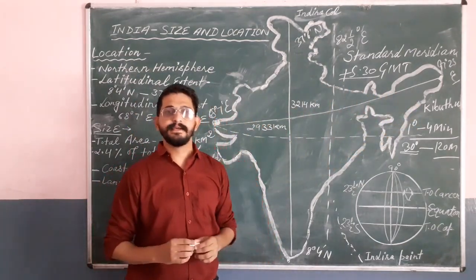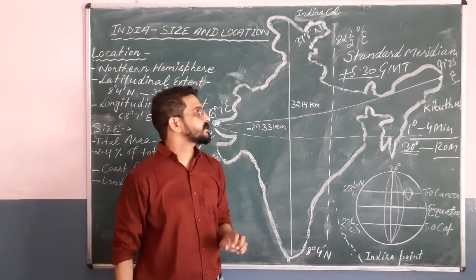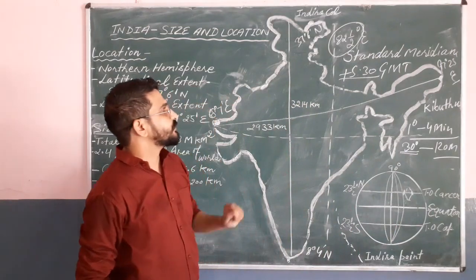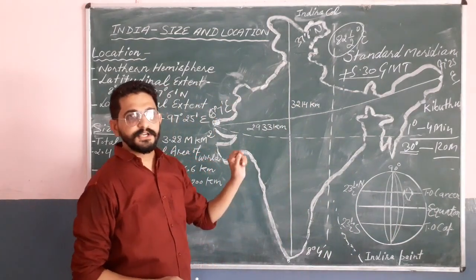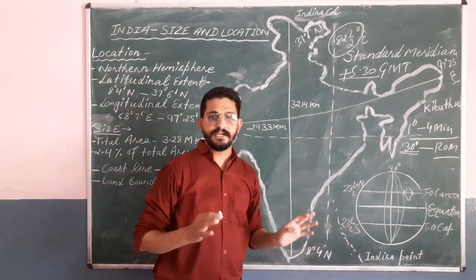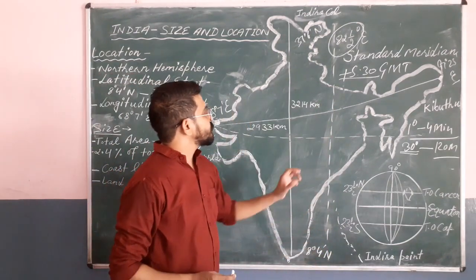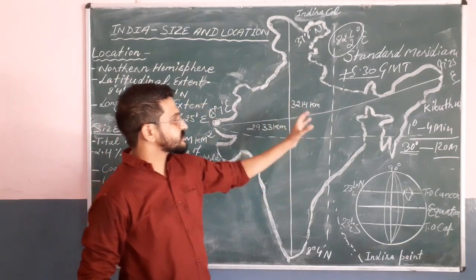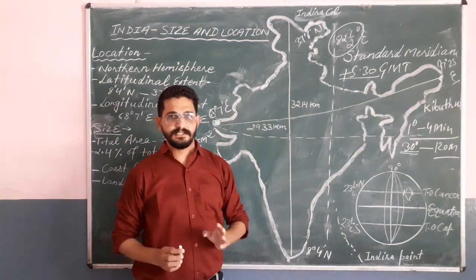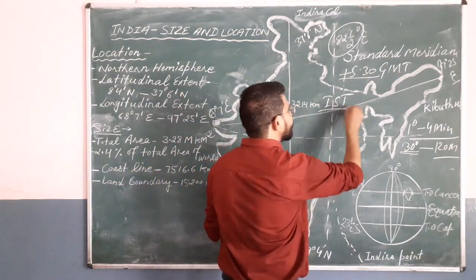To avoid this confusion, the whole country follows one standard time. This standard time is set at 82 degrees 30 minutes east, and it passes through the state of Uttar Pradesh near a place called Mirzapur. This time is called Indian Standard Time, or IST.